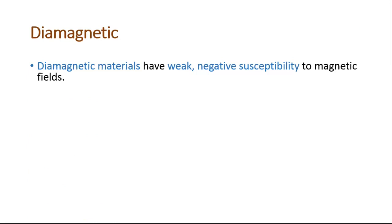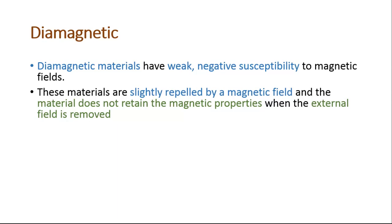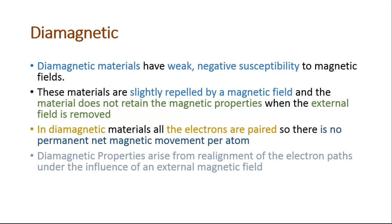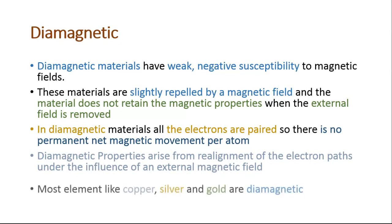Diamagnetic materials have weak negative susceptibility to a magnetic field. These materials are slightly repelled by a magnetic field, and the material does not retain the magnetic properties when the external field is removed. In diamagnetic materials, all the electrons are paired, so there is no permanent net magnetic moment per atom.